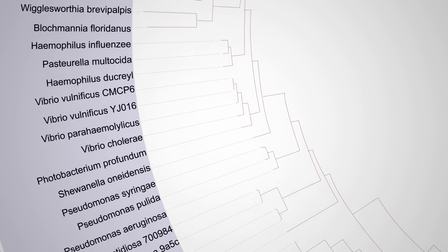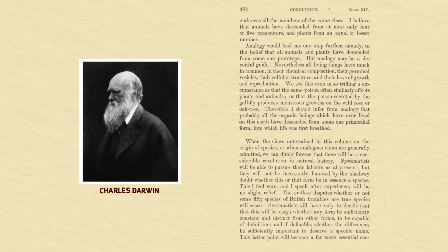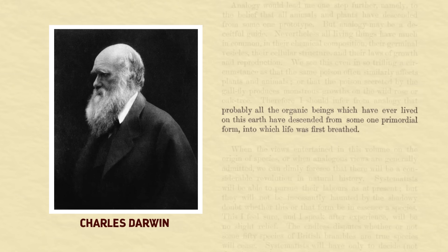If you trace all the branches on the Tree of Life backward, you realize that they all come from the same trunk. That initial point before anything branches is a single species. The first species. Darwin himself theorized that such a thing once lived. He called it the primordial form into which life was first breathed.